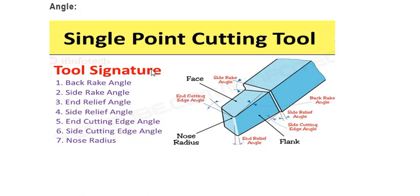In tool signature we will study about different types of angles that are used for describing the single point cutting tool — these are very important. As a mechanical engineer you should know all the angles along with tool nomenclature. The angles of the single point cutting tool are collectively known as tool signature. Now we will start with the tool signature.